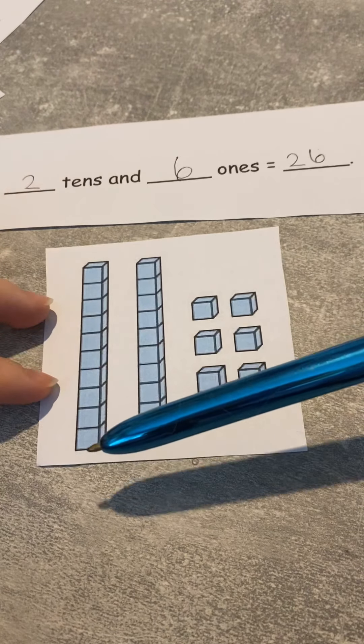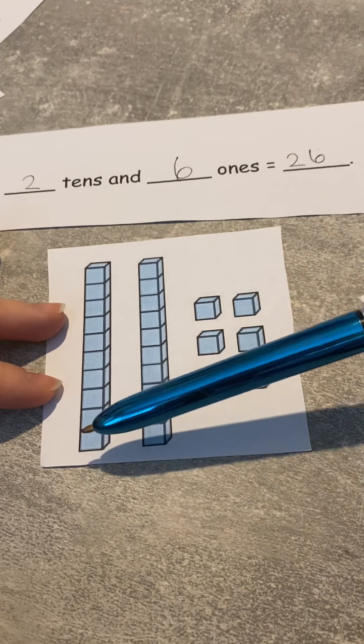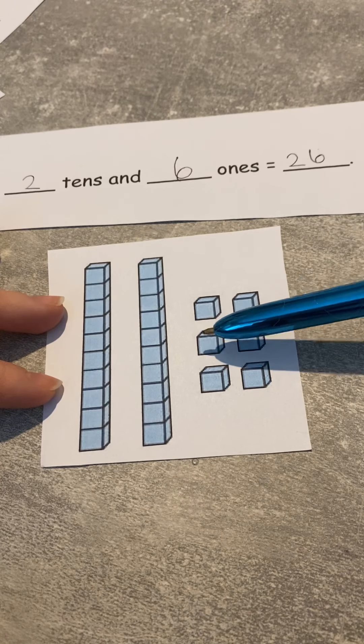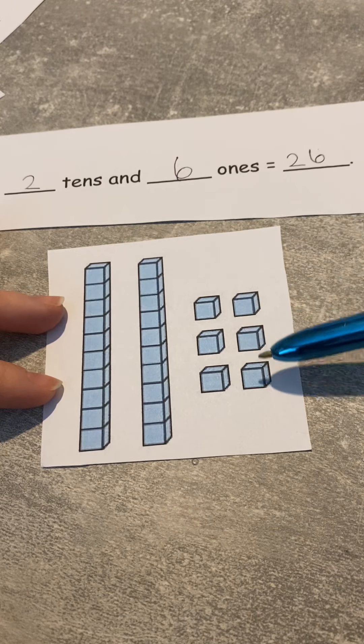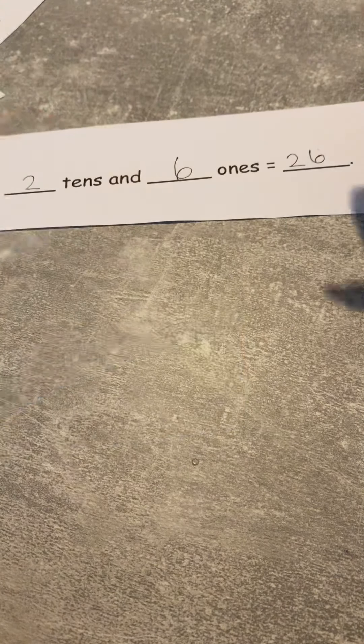So two tens and six ones equal 26. And we can double check that because we know we've got two lots of 10, so 10, 20. So 10, 20. How many ones have we got? One, two, three, four, five, six. So we've got 26. Super! Let's do another one together.